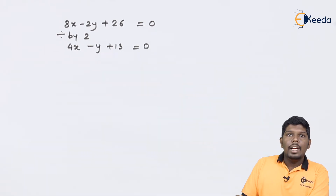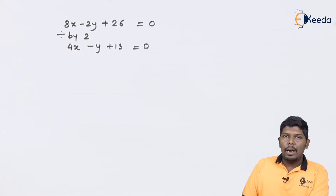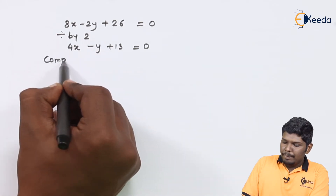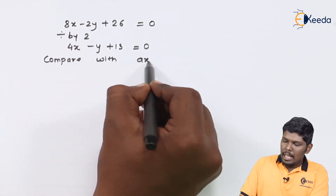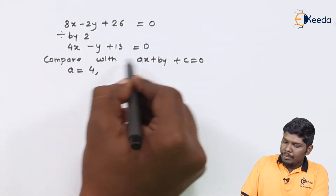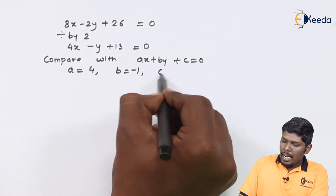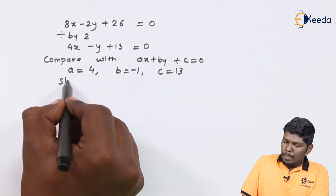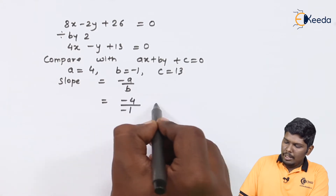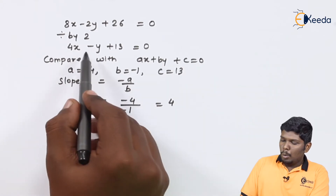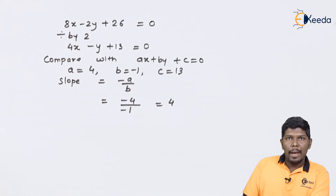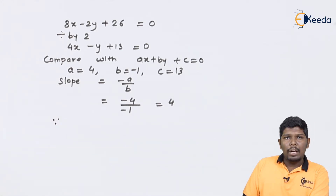This line is parallel to our given tangent. We know that if two lines are parallel, they have equal slopes. To find the slope of this line, we compare with the general form ax + by + c = 0, giving a = 4, b = -1, c = 13. Slope = -a/b = -4/(-1) = 4. So the slope of this line is 4.